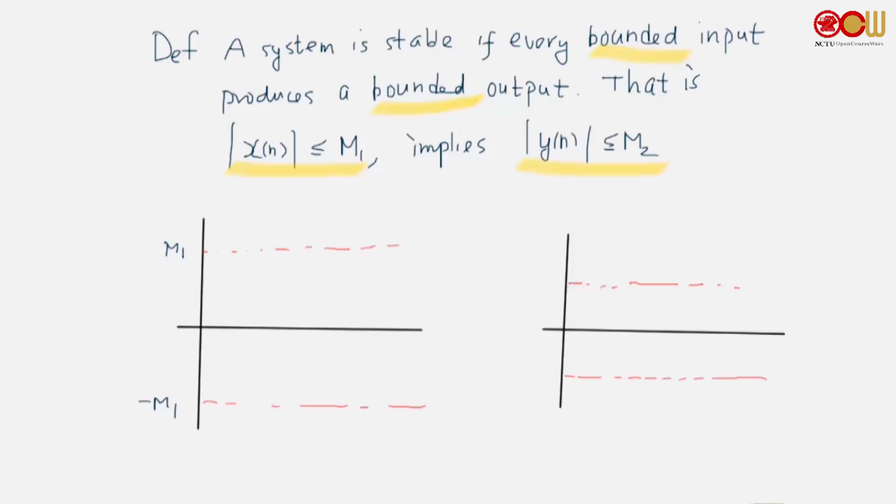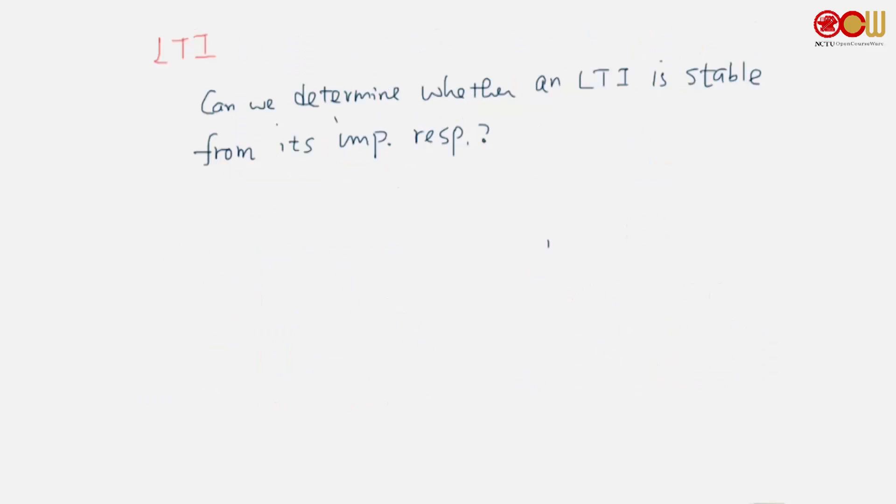We know if it's LTI, we can determine everything from its impulse response. How can we determine whether it's stable or not? Recall the continuous time case - we can also determine the stability from its impulse response. In that case, it's whether this integral is bounded. Now let's look at the discrete time case.